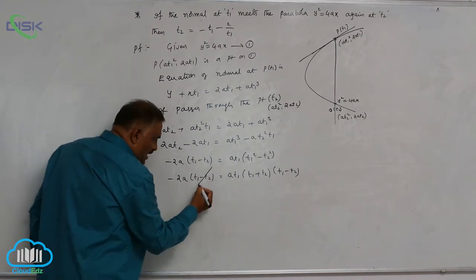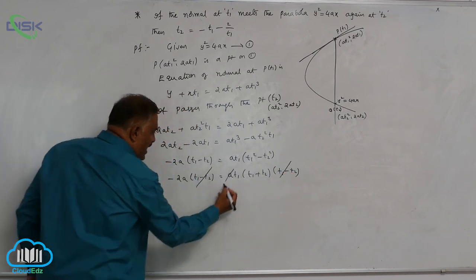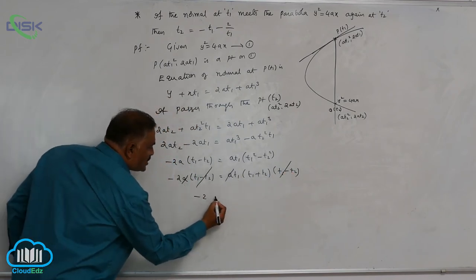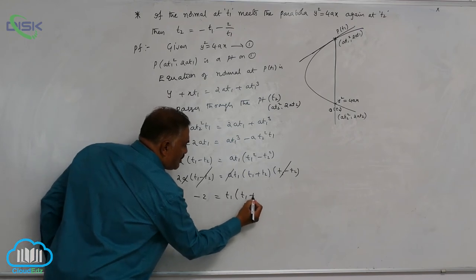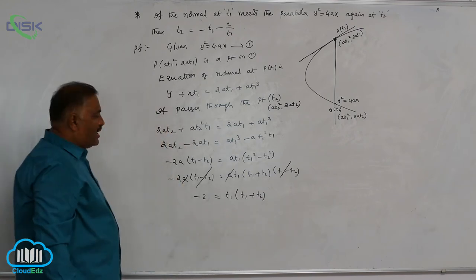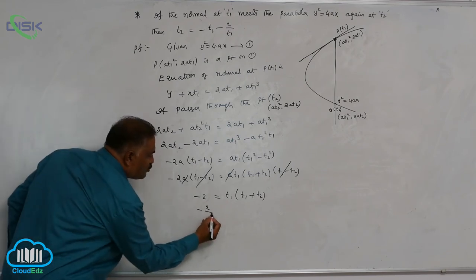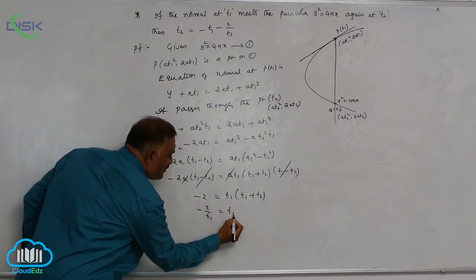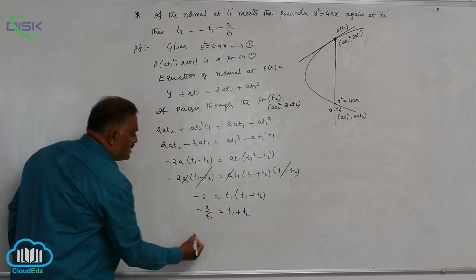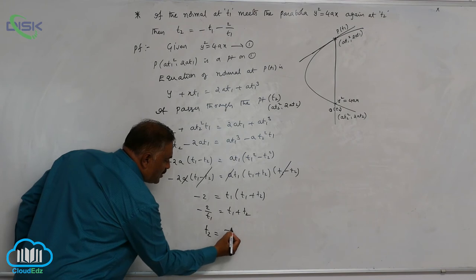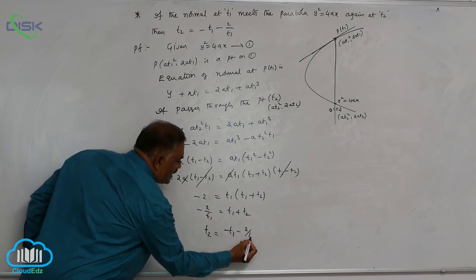Now, you can check once again: (T1 - T2) gets cancelled, A gets cancelled. -2 equals T1 times (T1 + T2) is left over. Now, bring this T1 to this side: -2/T1 = T1 + T2. Now, send T1 to this side. That is why T2 = -T1 - 2/T1.